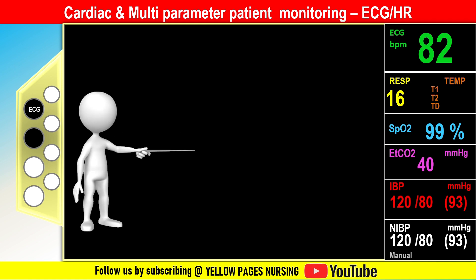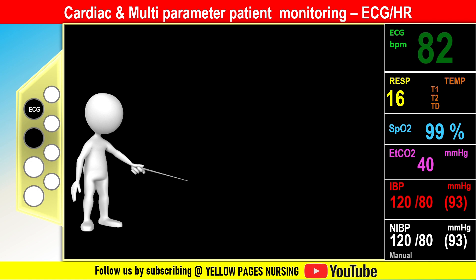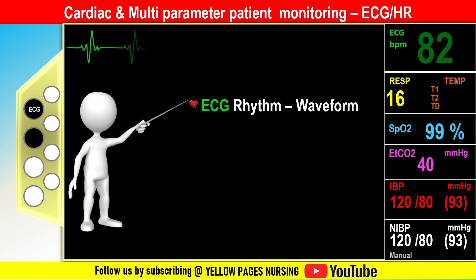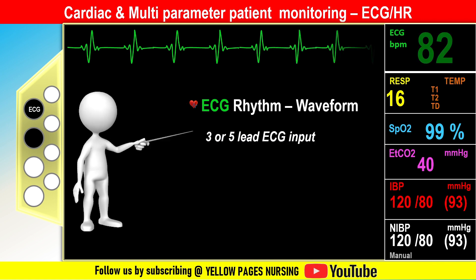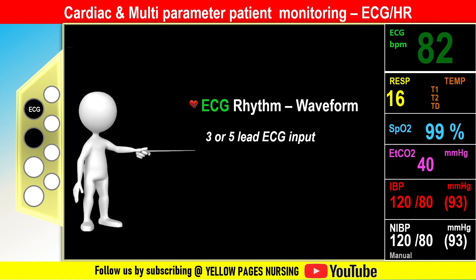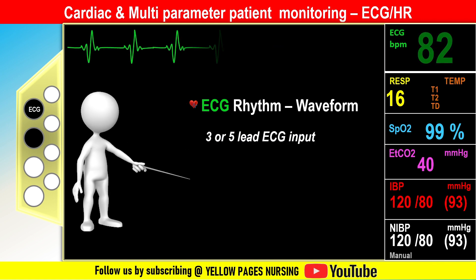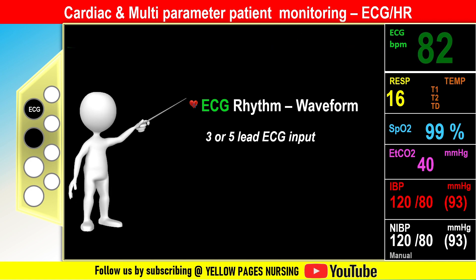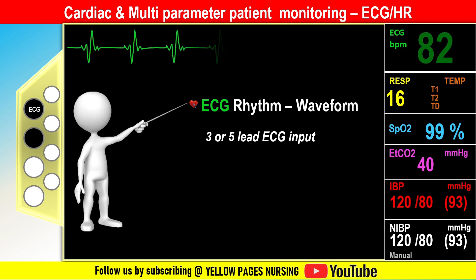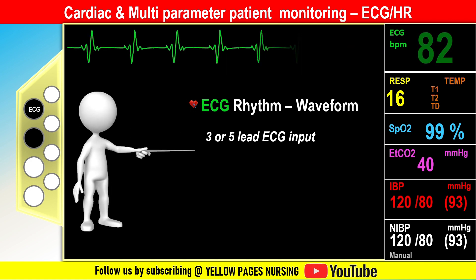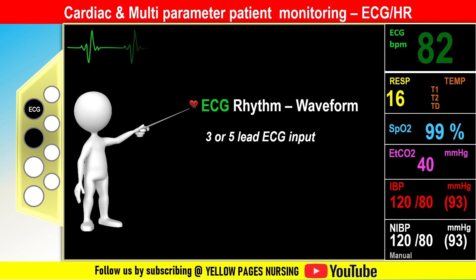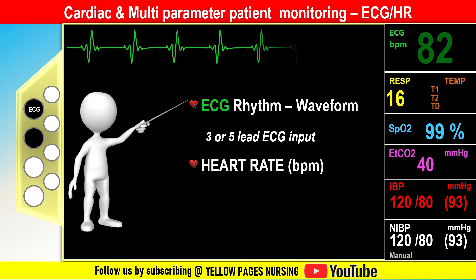Parameters that can be monitored include electrocardiogram, available in three-lead or five-lead mode. ECG electrodes are attached on the patient's chest and the cable is connected to the monitor in order to monitor the electrical activity of the heart, displaying the heart rate and rhythm.